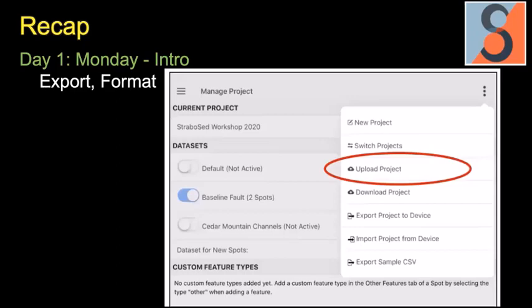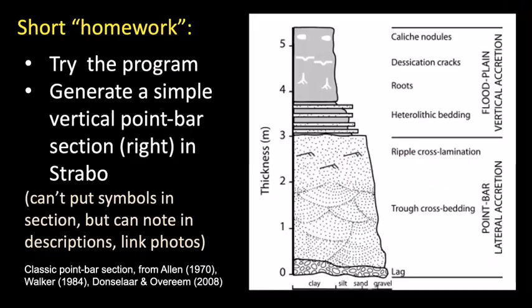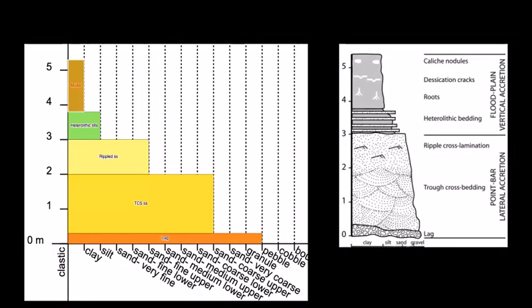We also covered datasets and how to use functions to format, export, or upload projects. The short homework assignment was to try the program and generate a simple vertical point bar section — a classic example. You can't put all the symbols in yet, but you can make notations and link photos. A simple example would show a coarse lag at the bottom, trough cross-stratified, rippled, heterolithic, and mudstone intervals.